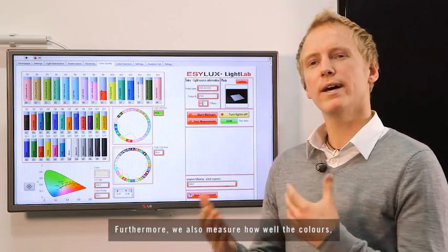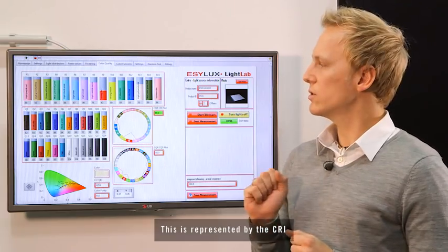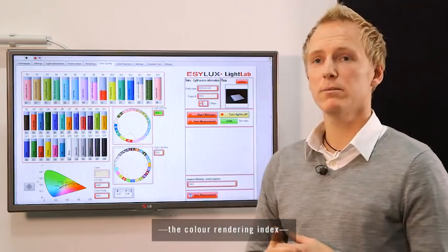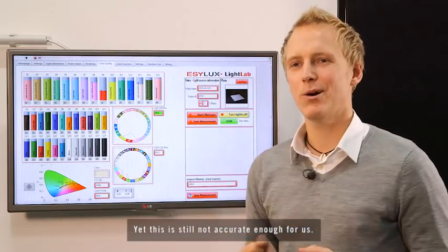Zusätzlich messen wir auch, wie gut werden eigentlich Farben wiedergegeben, die von dieser Leuchte beleuchtet werden. Das wird in dem sogenannten CRI dargestellt, dem Color Rendering Index, der über diese 15 verschiedenen Farben dargestellt wird, der uns aber noch nicht genau genug ist.